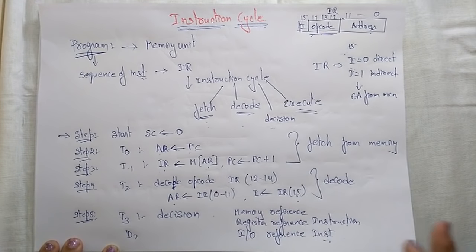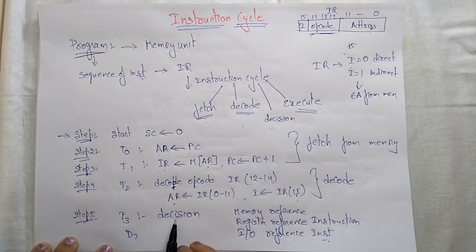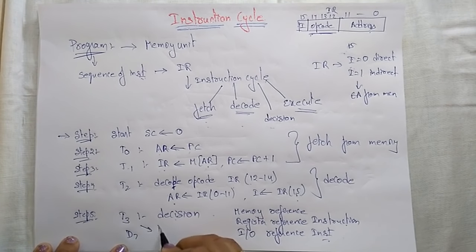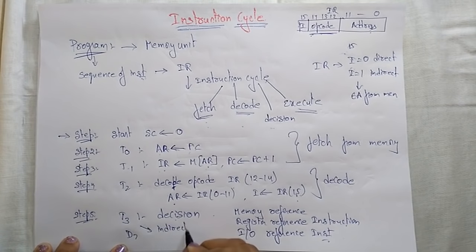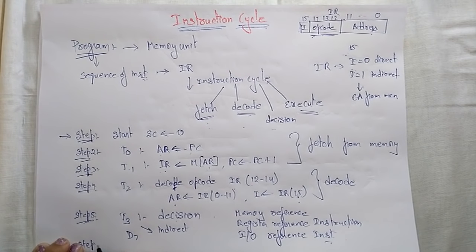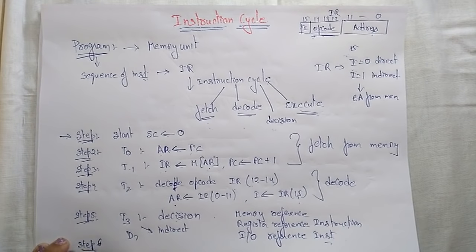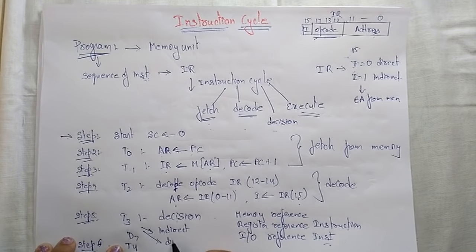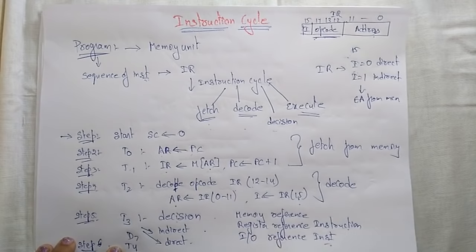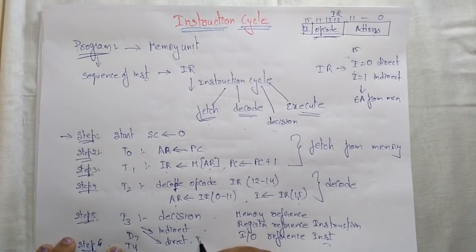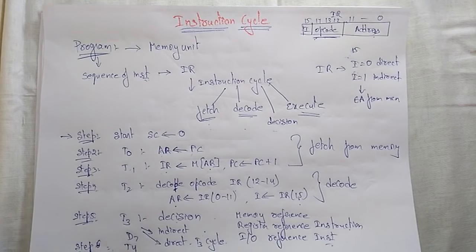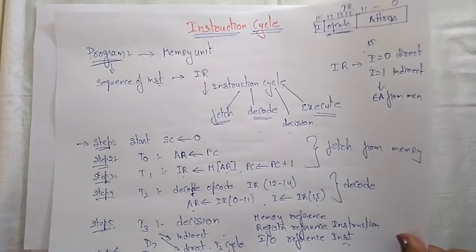During T3, if it is not direct addressing — that is, if it is indirect — the execution will be taken at T4. If it is direct addressing, the execution will directly take place at the T3 cycle itself. Now let us see the flowchart of this instruction cycle.